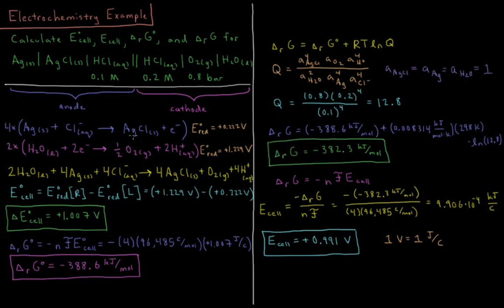So if I do that what this ends up going to is a total net reaction of two H2O liquid plus 4 silver solid plus 4 Cl minus aqueous yields 4 AgCl solid plus O2 gas plus 4 aqueous H plus ions.